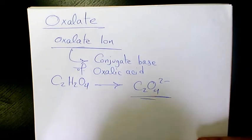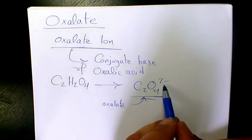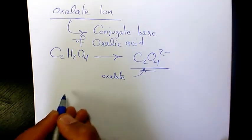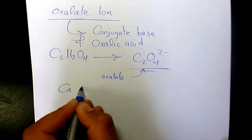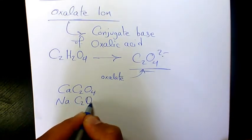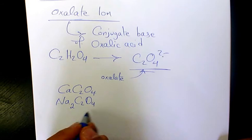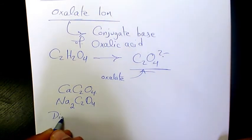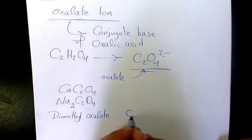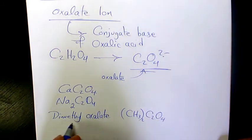As you see here, it's 2-. Some famous compounds with oxalate include calcium oxalate CaC2O4 and sodium oxalate Na2C2O4 (we need to write Na2 because the oxalate is 2-). We also have dimethyl oxalate, which is (CH3)2C2O4.